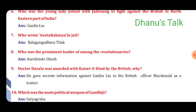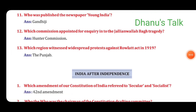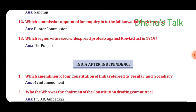Question No. 10: Which was the main political weapon of Gandhiji? Answer: Satyagraha. Question No. 11: Who published the newspaper Young India? Answer: Gandhiji. Question No. 12: Which commission was appointed for inquiry into the Jallianwala Bagh tragedy? Answer: Hunter Commission. Thirteenth question: Which region witnessed widespread protest against the Rowlatt Act in 1919? Answer: The Punjab. From the next chapter: India after Independence.